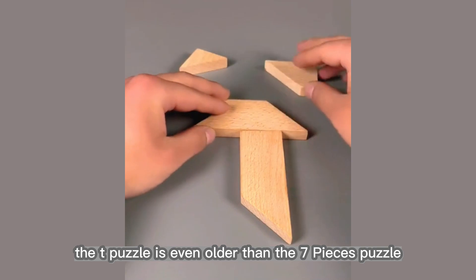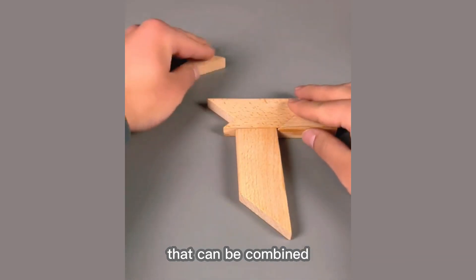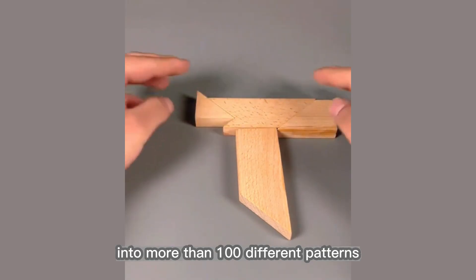the T-puzzle is even older than the seven-pieces puzzle. It consists of four wooden blocks of different shapes that can be combined into more than 100 different patterns. Among them,